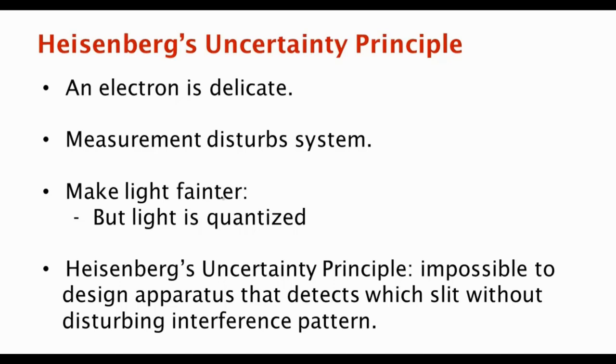And this is something that's expressed in Heisenberg's uncertainty principle. It's a more general principle, but for the double-slit experiment, it basically says that it's impossible to design an apparatus that detects which slit the electron went through without disturbing the interference pattern. The extent to which you can detect which slit it went through is the extent to which you disturb the interference pattern.